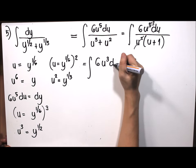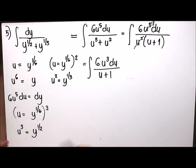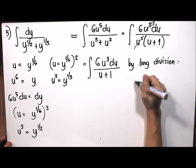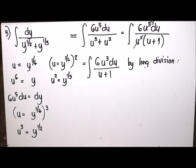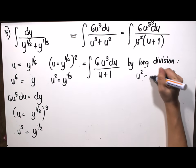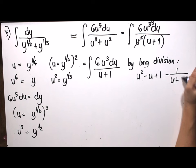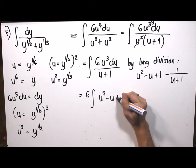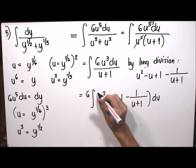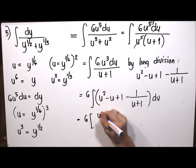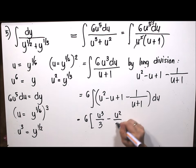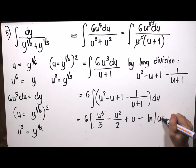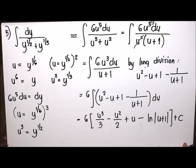Substituting into the given, dy becomes 6u to the 5 du, y to the 1/2 becomes u cubed, and y to the 1/3 becomes u squared. The denominator u cubed plus u squared has a common factor u squared. Factoring gives u squared times u plus 1. Canceling u squared from numerator and denominator leaves 6 times the integral of u cubed du over u plus 1. By long division, u cubed divided by u plus 1 gives quotient u squared minus u plus 1 with remainder negative 1 over u plus 1.